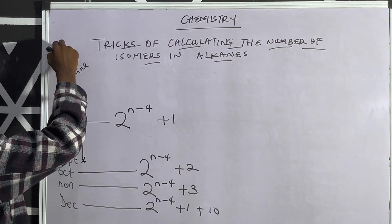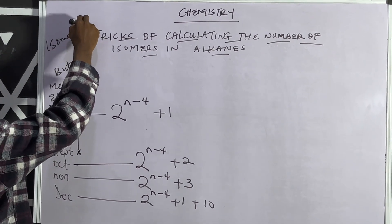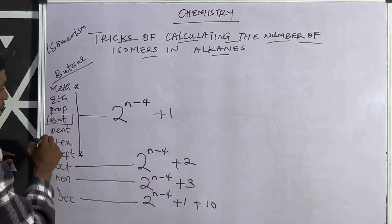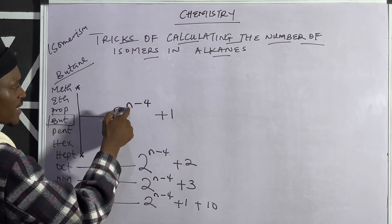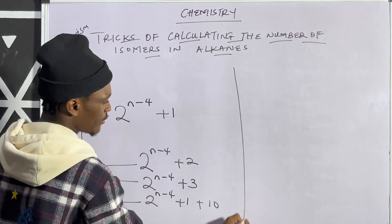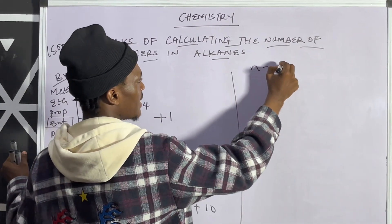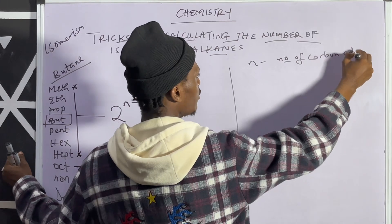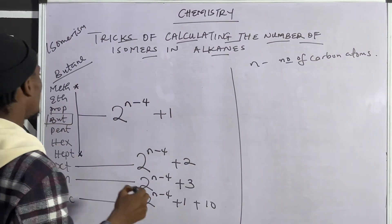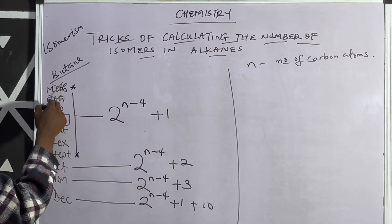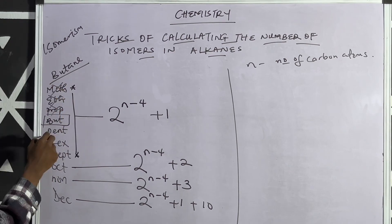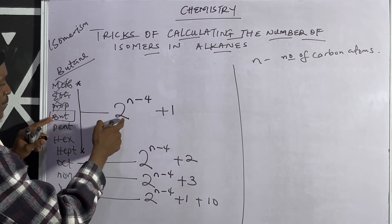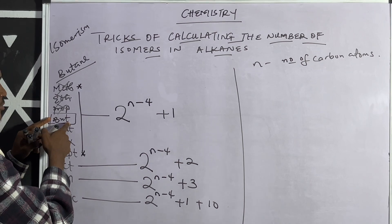As I said, isomerism in alkanes starts from butane, which is the fourth member. So n represents the number of carbon atoms. We are not going to apply the formula to methane, ethane, or propane because they have no isomers — isomerism starts with butane.